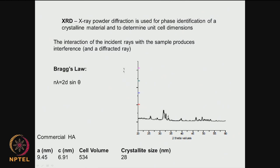For example, this is a typical X-ray diffraction picture of a commercial hydroxyapatite. We can see sharp peaks characteristic of hydroxyapatite and compare them with literature values. On the X-axis we plot 2θ, and from the θ values using Bragg's law we calculate the crystal dimensions. The crystal size is 28 nanometers, crystal volume is 534 nm³, and the unit cell has dimensions A = 9.45 and C = 6.91 nanometers.